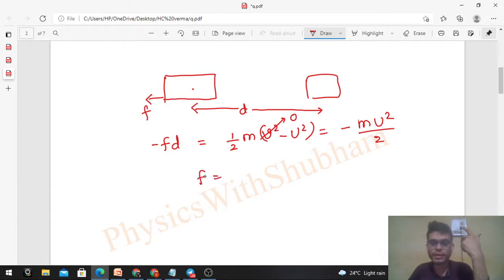Again from here f comes out as mu²/2d - same result. This equation you already wrote earlier.